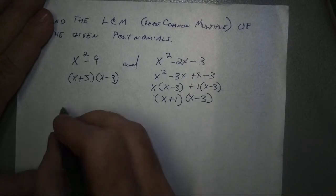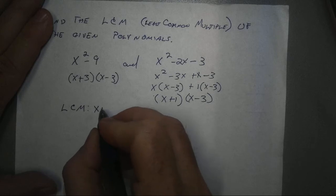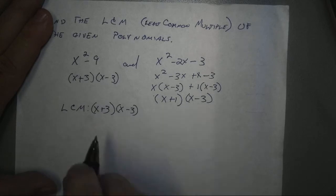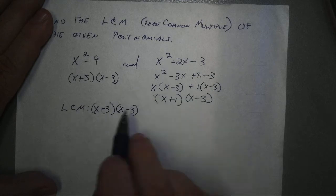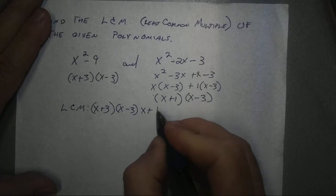Now, for the least common multiple, I start with the first one, x plus 3, x minus 3. And then, when I come to my second polynomial, I've already got an x minus 3, but I need to add in an x plus 1.